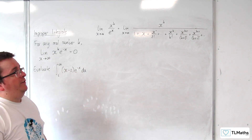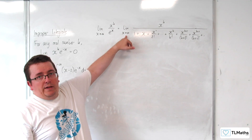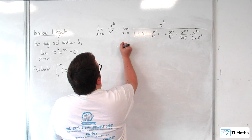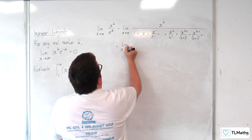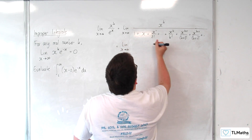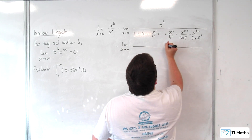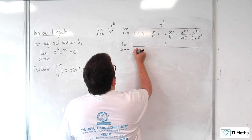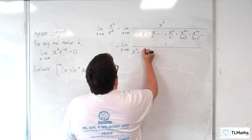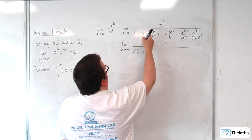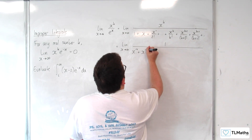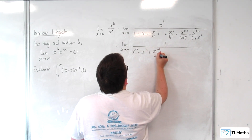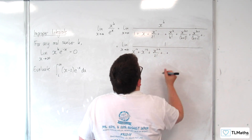Now, because x is tending to infinity, it would be perfectly fine to divide top and bottom by x to the k. So the limit as x tends to infinity, we're going to have 1 in the numerator. Dividing each of these terms by x to the k, I'm going to have x to the minus k, plus x to the 1 minus k, then x to the 2 minus k over 2 factorial, and so on.